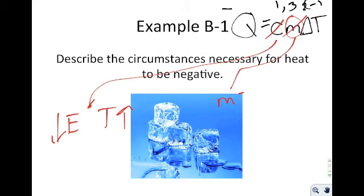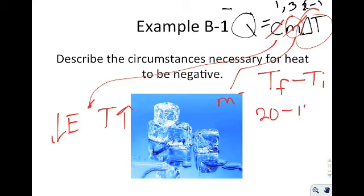The only way heat can be negative is if you have a negative change in temperature — in other words, the final temperature is less than the initial temperature, such as 20 minus 100 giving negative 80. A negative Q value means heat is leaving the system, resulting in a lowering of temperature.